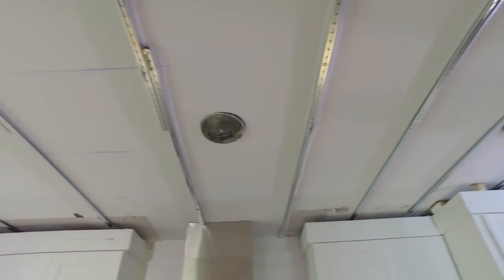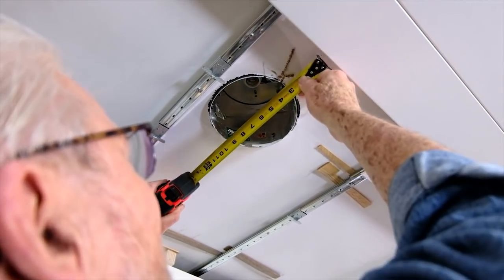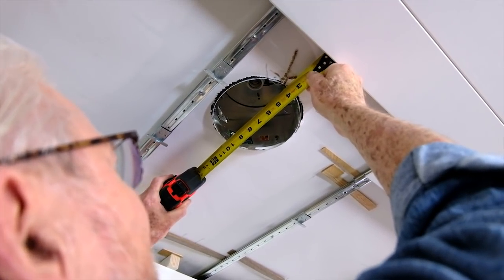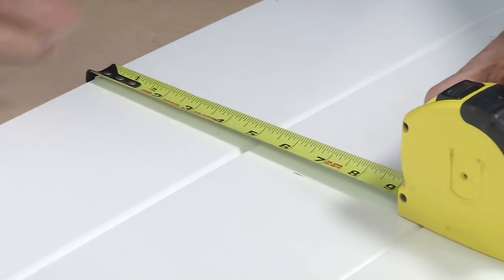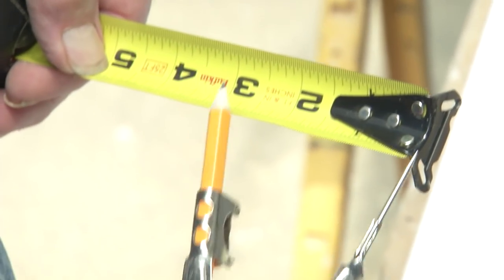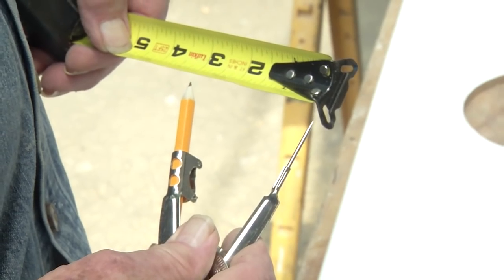This room had several recessed lights. To locate the cutouts for these, we measured from the edge of the nearest plank to the center of the fixture, then transferred those measurements to the planks to be cut. We then used a compass to draw a circle of the correct size.